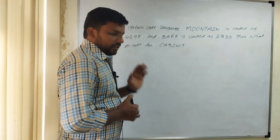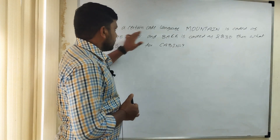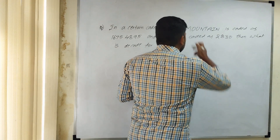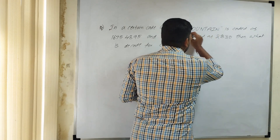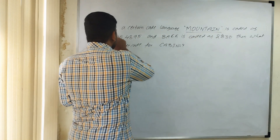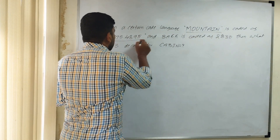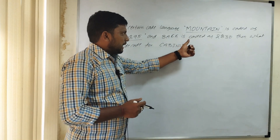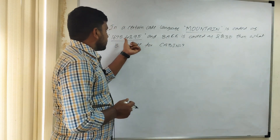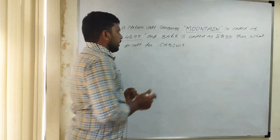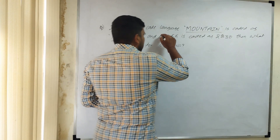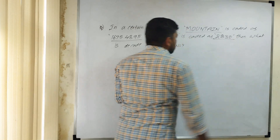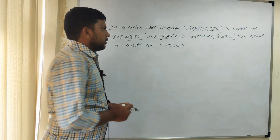Number coding first question discussion. In a certain code language, mountain is coded as 16754895. And back is coded as 2830.